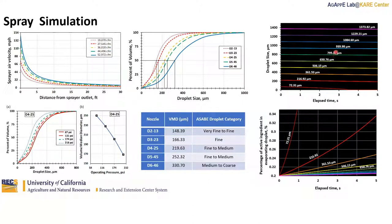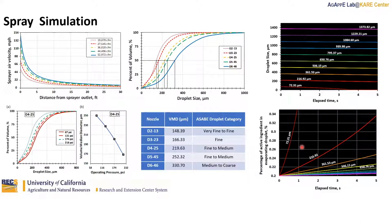Here on the right is a simulation of droplet evaporation over time. Each line represents a different droplet size. We see the changing droplet sizes over time, with the smallest droplet size evaporating out of the spray fastest, and the next size following suit as elapsed time increases. Below this shows the changing percentage of active ingredients as water evaporates out of the droplets, and how quickly the concentration of active ingredient changes based on droplet size.